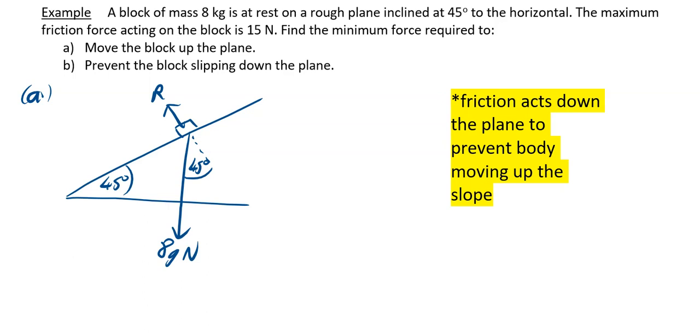Find the minimum force required to move the block up the plane, I'm going to call that capital X, and what we have going down the plane is a frictional force of 15 newtons. Friction acts down the plane to prevent the body moving up the slope. If you're about to move, the minimum force required means you're just on the point of moving up the plane, so your friction has to be acting down the plane.